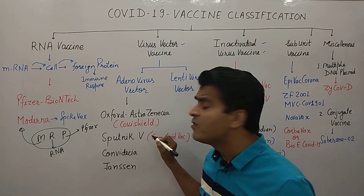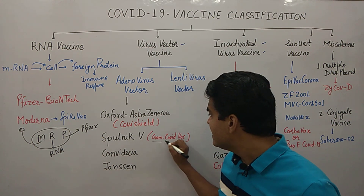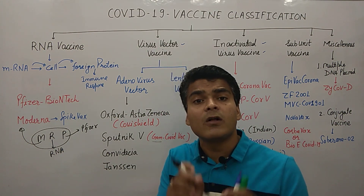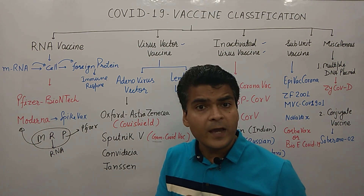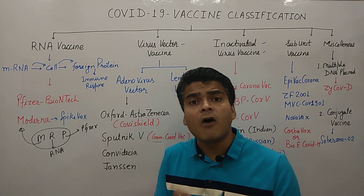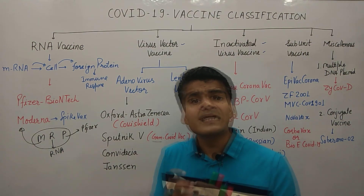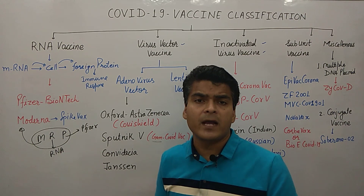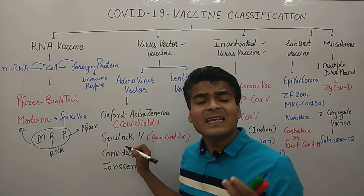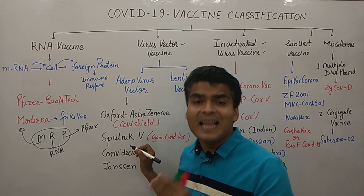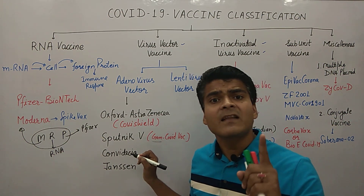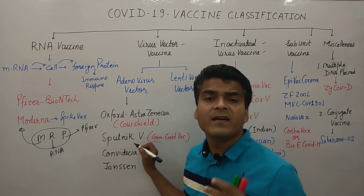Sputnik V's brand name is Gam-COVID-Vac. It is a Russian vaccine developed by the Gamaleya Research Institute of Epidemiology and Microbiology. There is also a related vaccine called Sputnik Light. Sputnik Light is given in only one dose, while Sputnik V is given in two doses. Importantly, Sputnik V is the first registered combined virus vector vaccine.